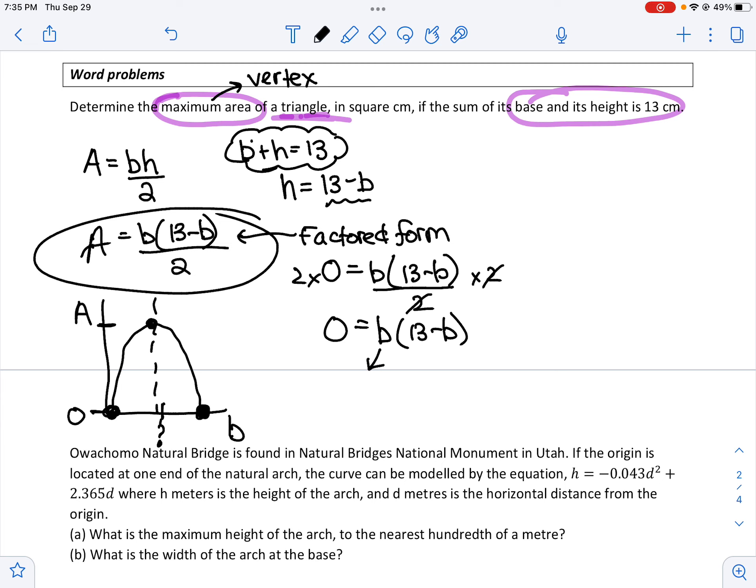And now, just like when I'm finding roots, I can set each bracket equal to zero. Or each term equal to zero. And then I just have to isolate b. So now I've found out that there's an x-intercept or a b-intercept at zero and at 13. So now if I want to find the vertex, it's going to be right in between those two. So right in between zero and 13, if I add them together and divide by two, is 6.5.